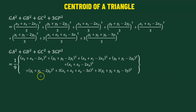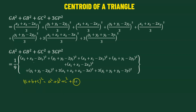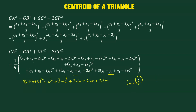Having factored out 1/9, we expand the first six terms using the identity (A + B + C)² = A² + B² + C² + 2AB + 2BC + 2CA. For the last two terms involving four quantities, we treat (x1 + x2 + x3) as a single term and subtract 3x, applying (A − B)² = A² − 2AB + B², then expand the squared sum again using the same identity.